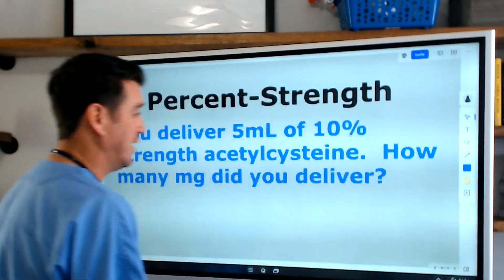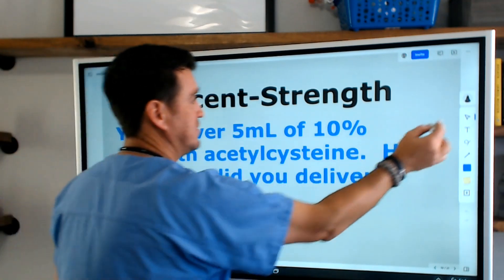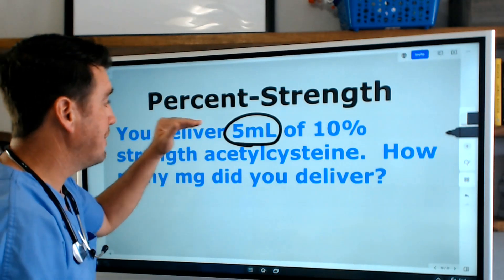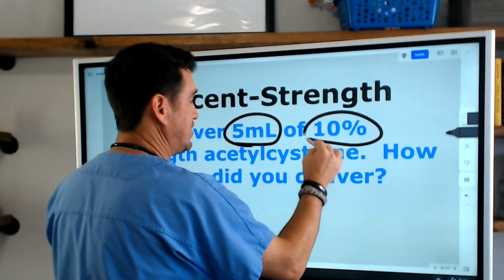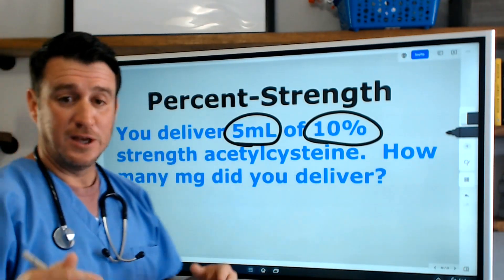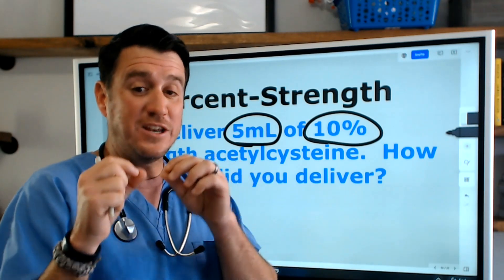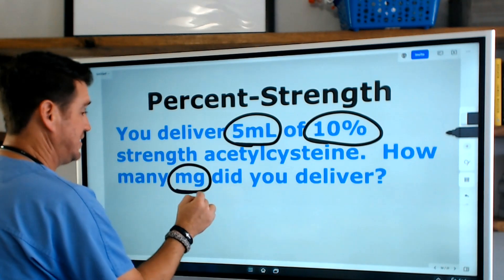You deliver 5 milliliters—this right here is your amount—of a 10 percent strength acetylcysteine. So now we have the strength and we know the amount, but the question is asking: how many milligrams did you deliver?